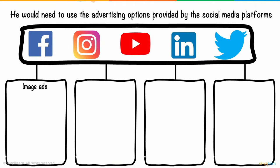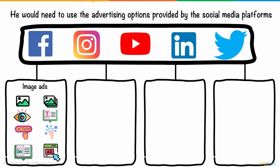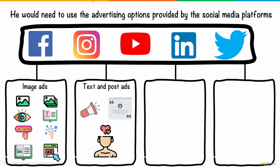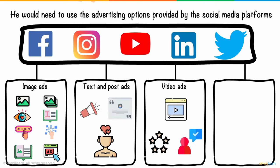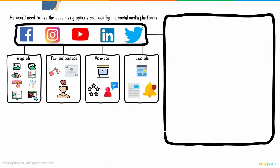Most advertising platforms offer a number of options. Image ads involve single or multiple attractive images with an optimal amount of text and a call to action. Text and post ads can advertise posts or excerpts from Phil's blog or book. Video ads can feature favorable reviews and customer testimonials. Lead ads allow Phil to collect information from users interested in a weekly newsletter or regular updates from his blog.